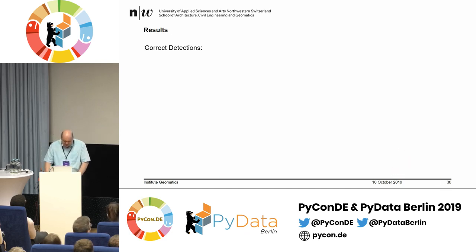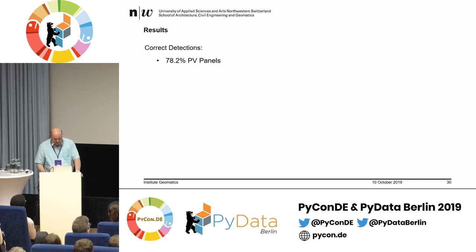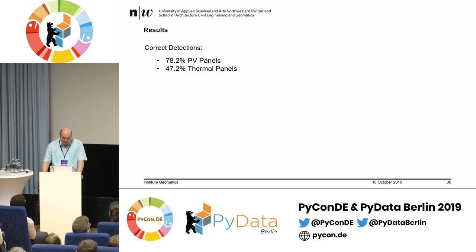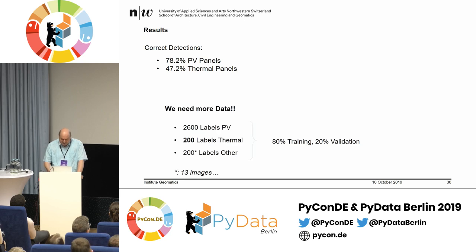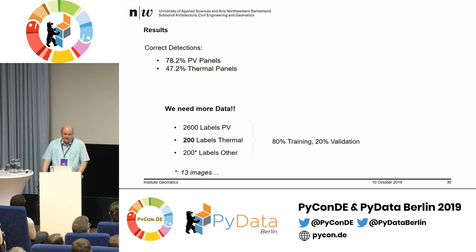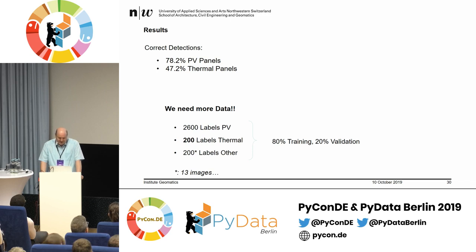If we look at the correct detections, we are at about 78% for the photovoltaic panels and only 47% for the thermal panels. But keep in mind, we don't have enough data at the moment, so it's not that bad. I think we can do better if we have more labels.